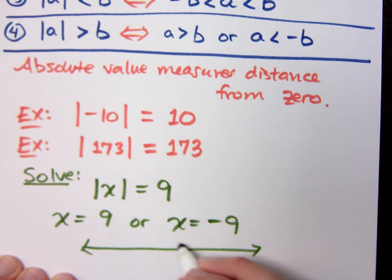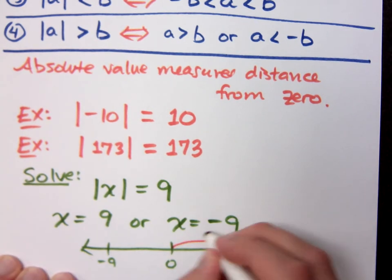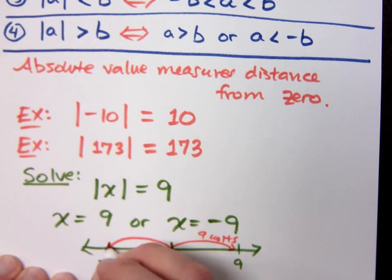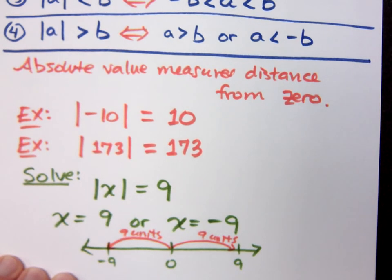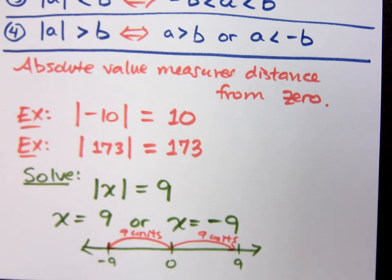And you can so easily see that if you were to graph this, there's 0. Here's negative 9 and here's 9. Both of these guys are 9 units there and 9 units that way. The absolute value of 9 is 9, and the absolute value of negative 9 is also 9. Is that okay with you guys?